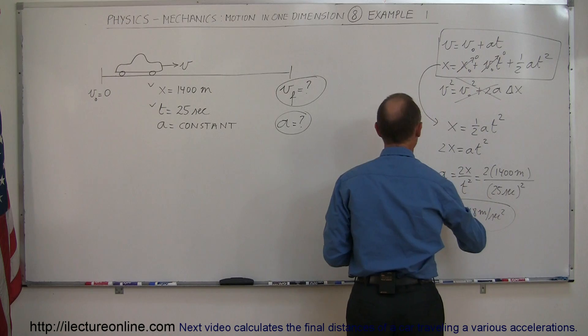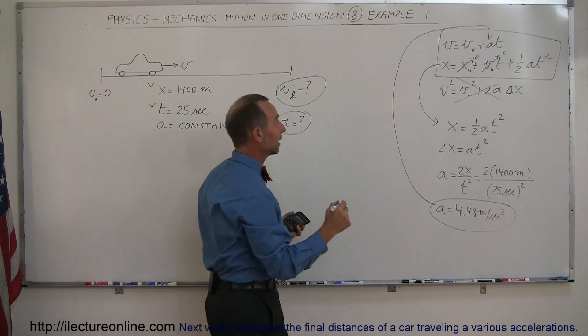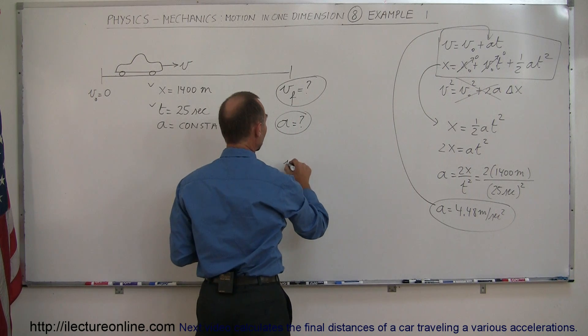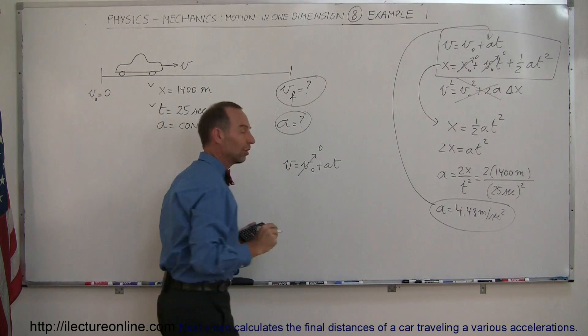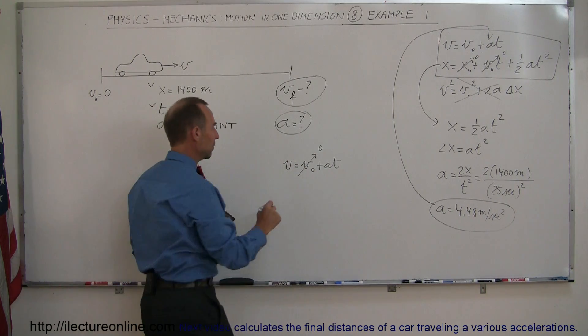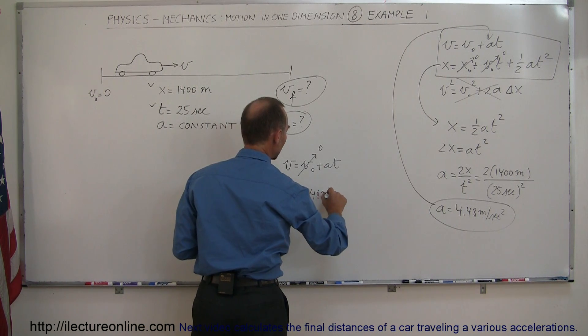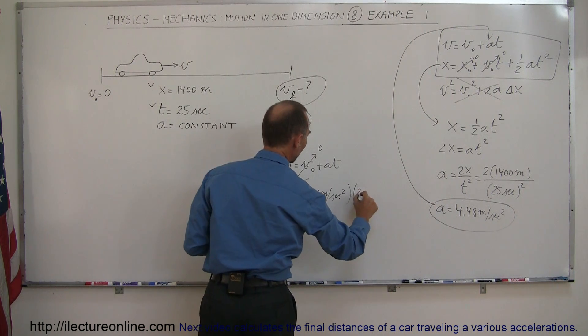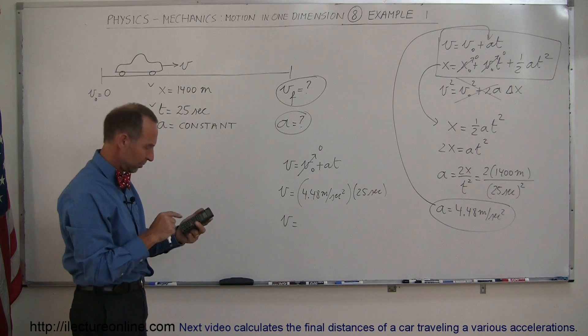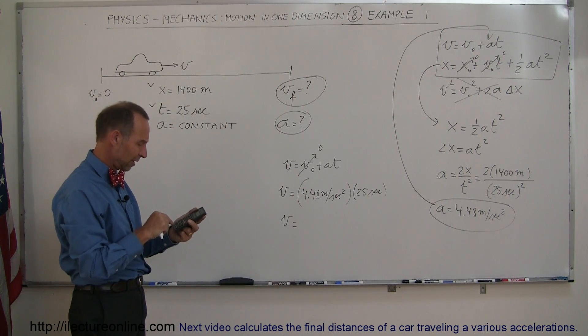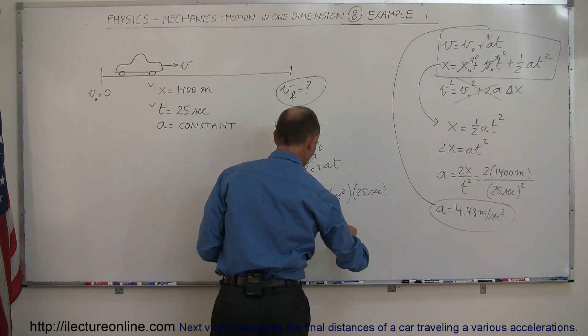Now that we know that, we're going to take that and plug that into the acceleration of that equation right there. So now we take our other equation of kinematics: V is equal to V sub naught plus AT. Remember that the initial velocity was equal to zero, so it goes to zero. That means the velocity is equal to the acceleration, which is 4.48 meters per second squared times the time of 25 seconds. That would be 112 meters per second.